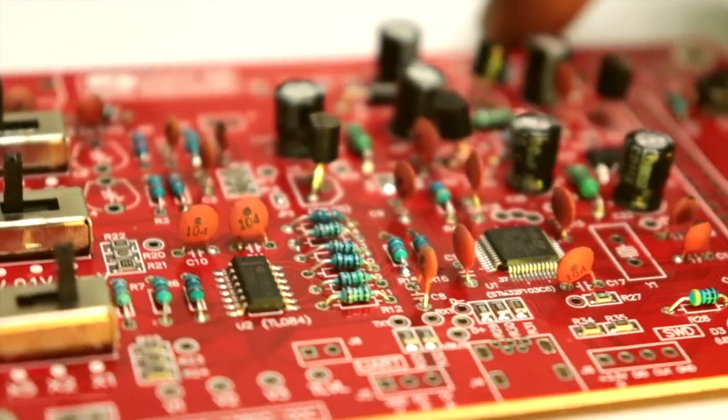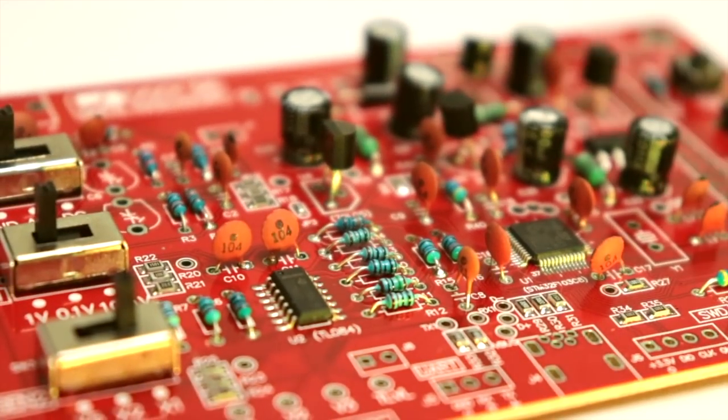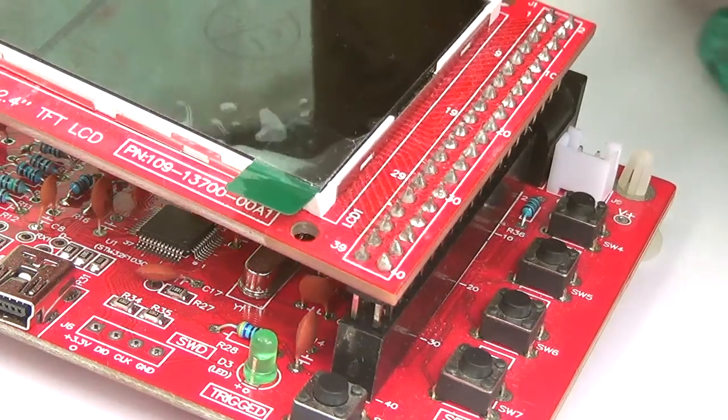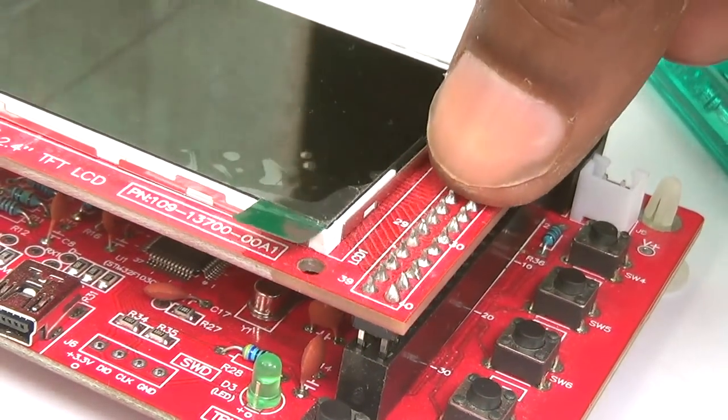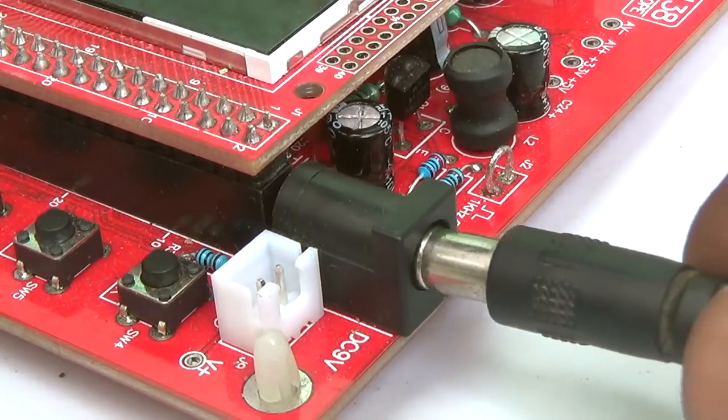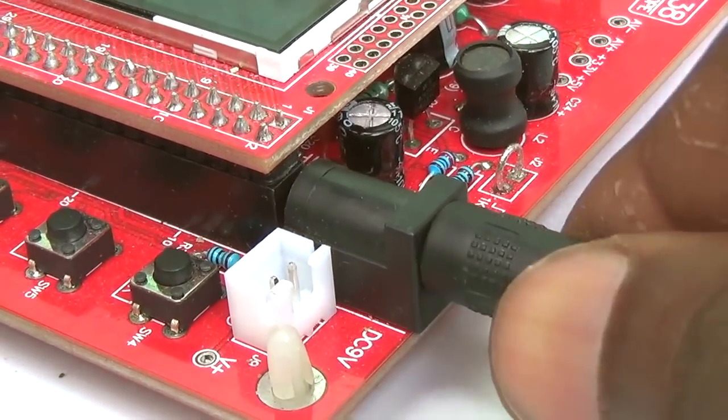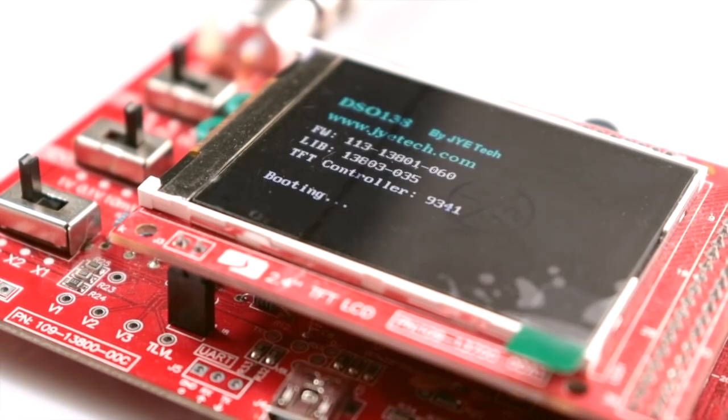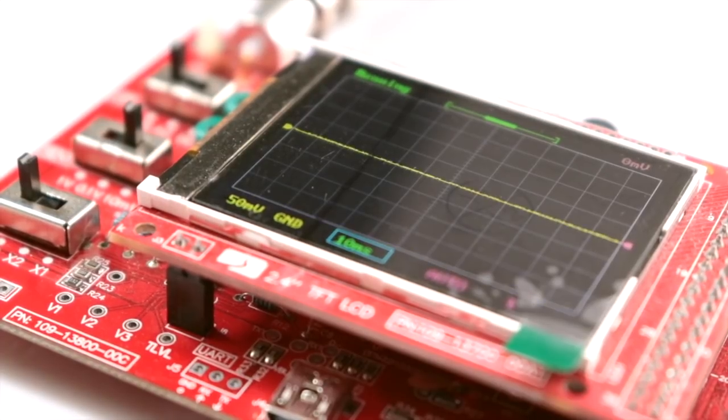See, all components are mounted. I hope you don't miss anything. I fit the 2.4 inch display in this female socket. And I set my power supply to 8 volts and powered up this oscilloscope. And you can see the oscilloscope is now booting up. And I hope you can see the time base line.